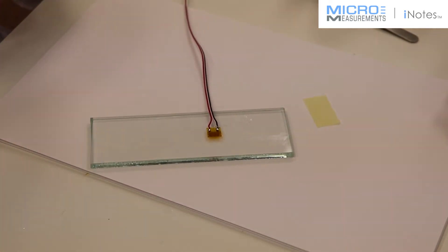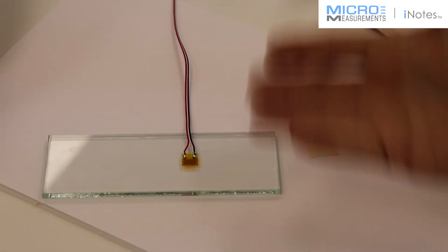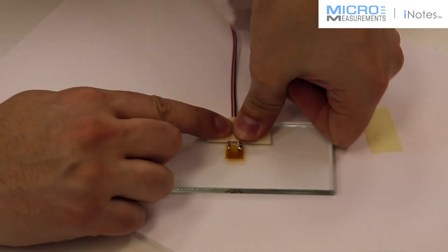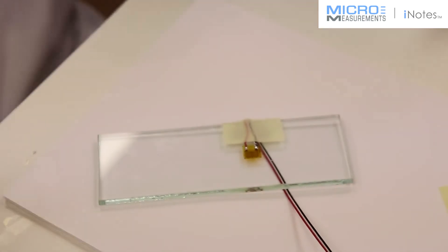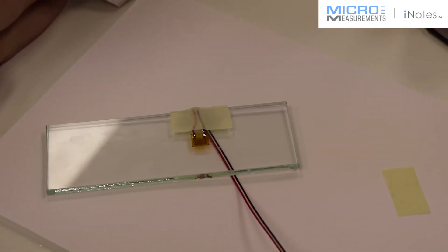And because we don't have a convenient place to do a real strain relief loop, we're going to put a piece of paper drafting tape across these leads, and then wrap it around the back side of the glass. And at this point, we can hook it up to a meter and make some strain measurements.